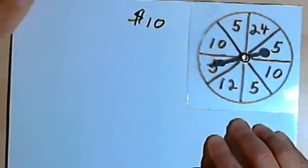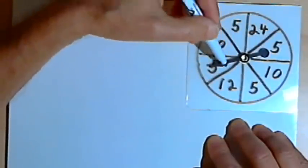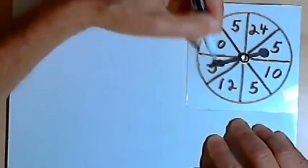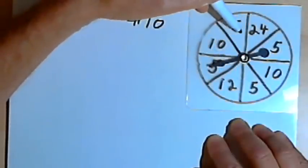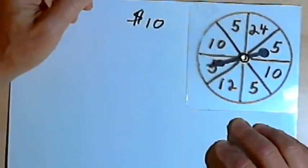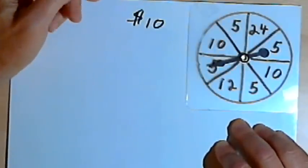Now if you only play this game once, you really don't know what the outcome is going to be. There's an equal probability that you could get any one of these sections. But if you play the game a lot of times, let's say thousands of times, then the law of large numbers is going to say that you're going to get each of those sections approximately one-eighth of the time. So let's see whether it would make sense to play this game a lot of times.